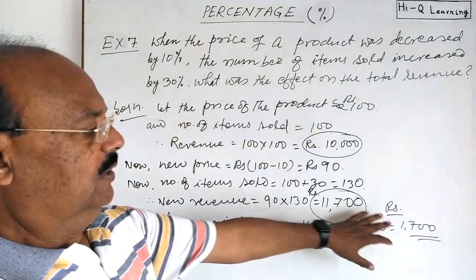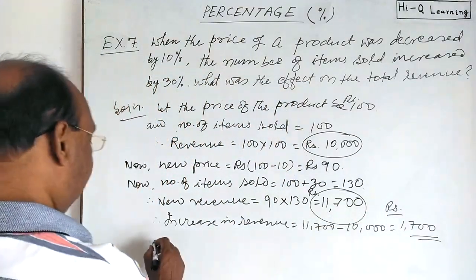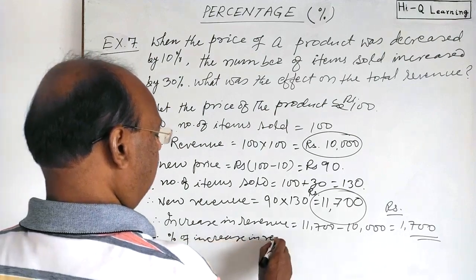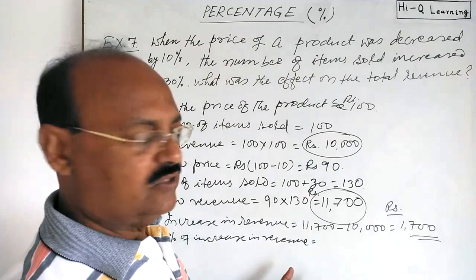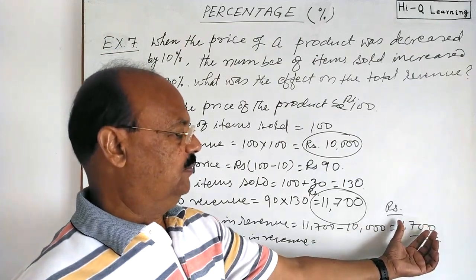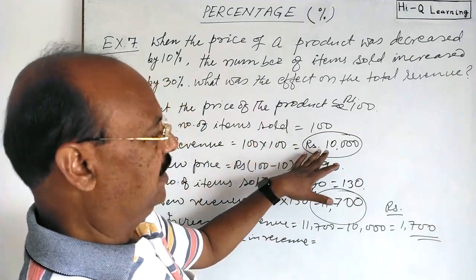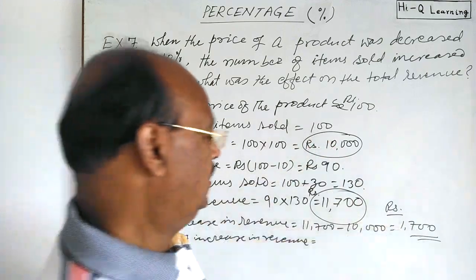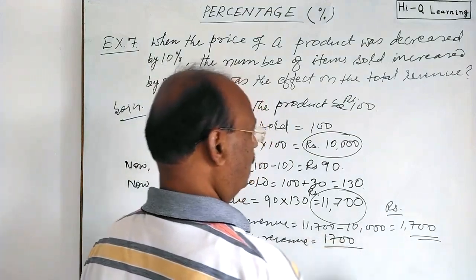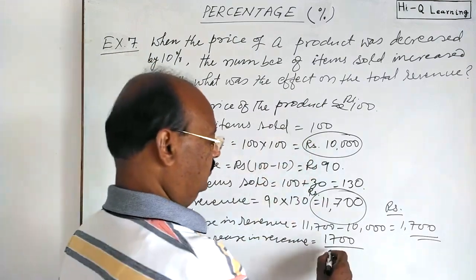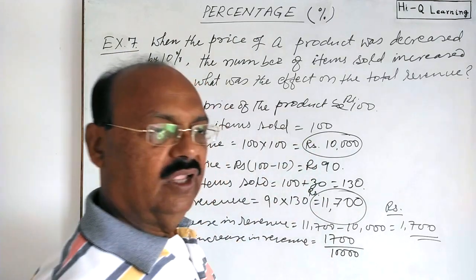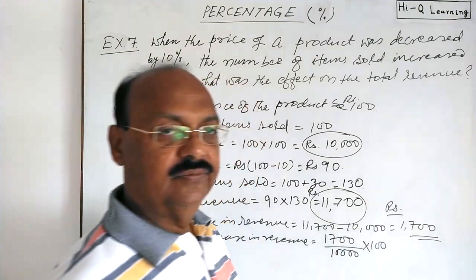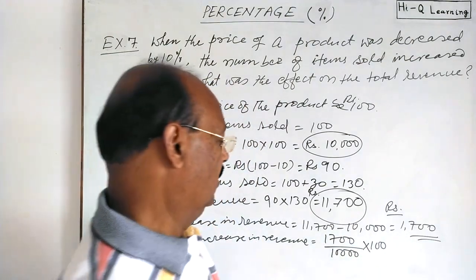Now we should calculate the percentage of this change. By unitary method: when earlier revenue was 10,000, the increase is 1,700. So if earlier revenue is 1, the increase is 1,700 divided by 10,000. We are calculating percentage, so we multiply by 100.